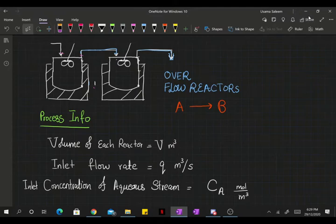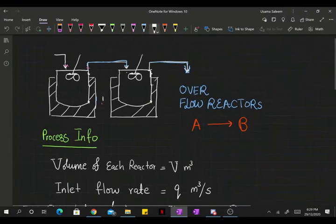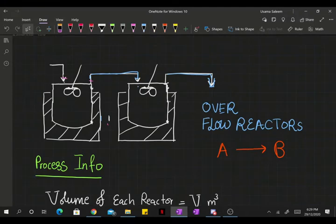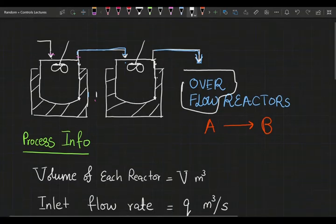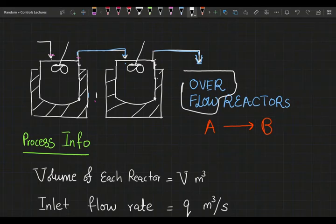If you can see the schematic here, both of these CSTRs are overflow reactors as I've mentioned. And the reaction happening in each vessel is an isomerization reaction, species A going to species B.